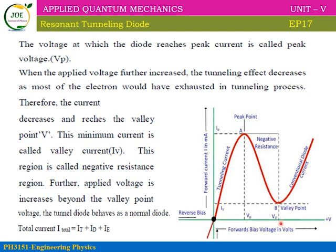After the peak current, if we continue to increase the voltage, the current decreases to a particular minimum value. This minimum current is called the valley current, and the corresponding voltage is called the valley voltage.